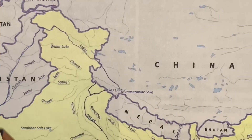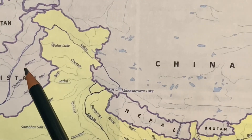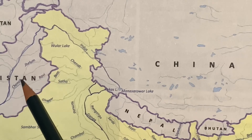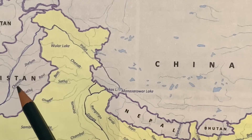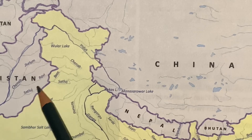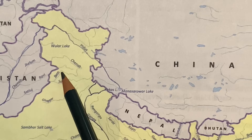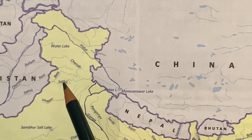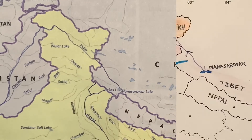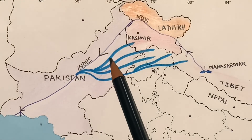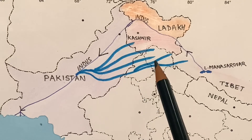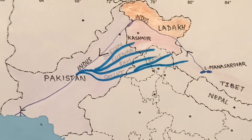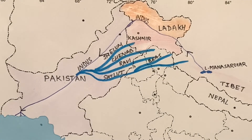Its tributaries are Jhelam, Chenab, Ravi, Beas, and Satlaj. In map pointing, you will draw blue lines for these tributaries and write their names.